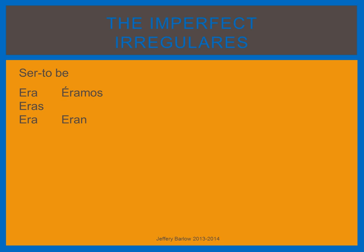The second irregular verb in the imperfect is ir, meaning 'to go.' To go is conjugated: iba, ibas, iba, íbamos, iban.